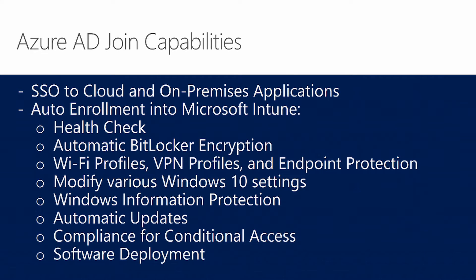Some of the capabilities of Azure AD Join include SSO to cloud and on-premises applications, providing a more fluid sign-on experience for Office 365. There's an Azure RMS tracking portal and the MyApps gallery that's part of Enterprise Mobility and Security. Microsoft keeps expanding these capabilities to more SSO applications.